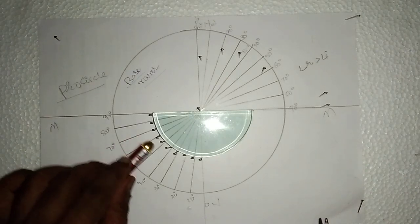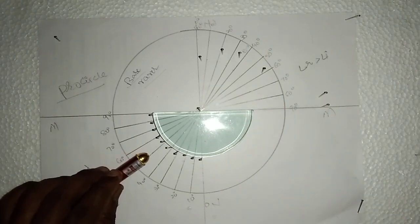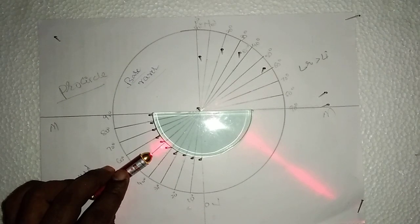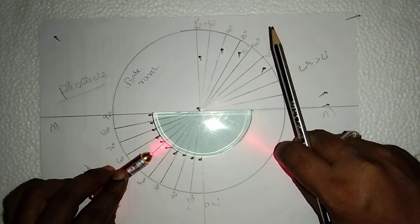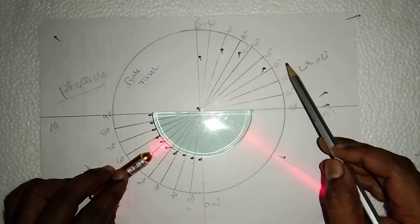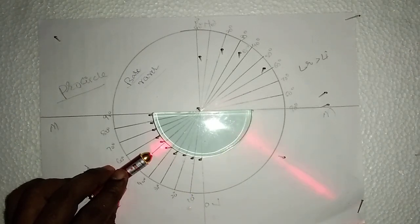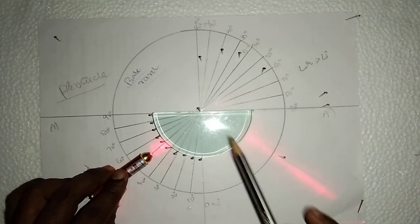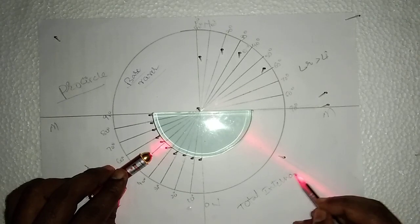Now, move the laser light beyond the critical angle. At 40 degrees or around 45 degrees, the light ray touches the interface of both air and glass. Now, if you observe the light ray at 50 degrees — beyond the critical angle — the refracted ray never enters into the rarer medium. Again, it enters into the denser medium. Whenever a light ray travels from denser to rarer beyond the critical angle, the light ray never enters the rarer medium; again it enters the denser. This phenomenon is called total internal reflection.